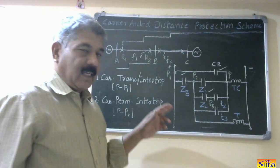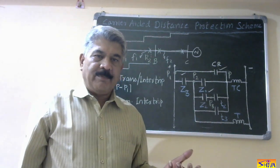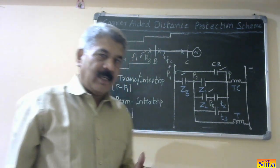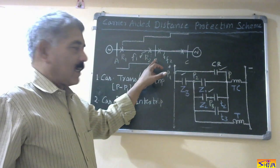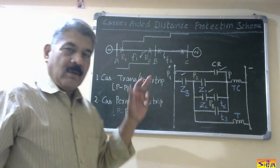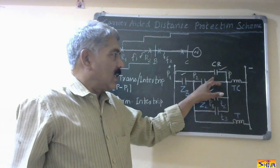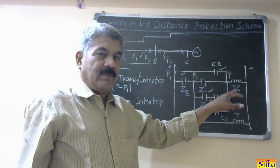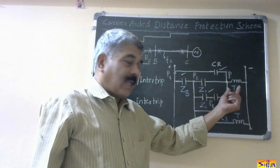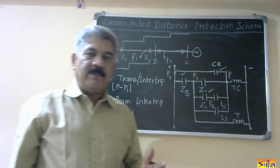So this is the carrier transfer or carrier intertrip scheme. Advantages: circuit breakers at both ends operate simultaneously, therefore there is immediate fault clearing and the transient stability of the system is improved. Drawbacks: first, carrier signals are transmitted over the faulty line. Second, due to a noise signal generated by a fault anywhere in the power system, if the carrier receive relay operates erroneously, there will be unnecessary tripping of the circuit breaker at R1.